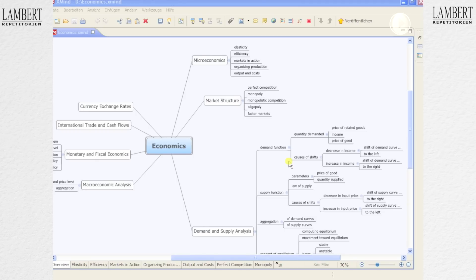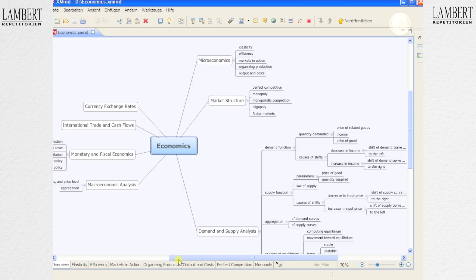Part of the CFA Level 1 exam is economics. As I can give you an overview here, it consists of, for example, demand and supply analysis, market structure, microeconomics, and so on. We'll be talking about the demand function in this video.